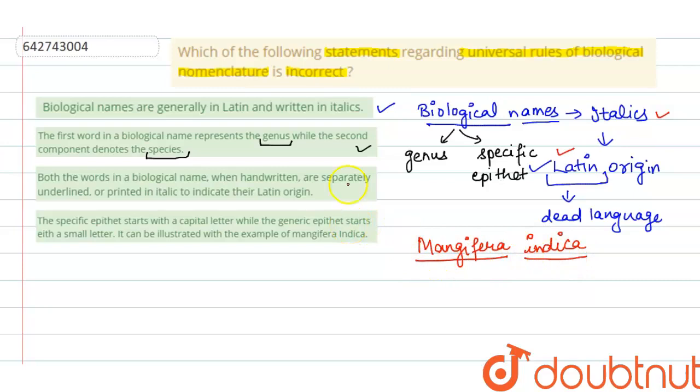The last option says that the specific epithet starts with a capital letter while the generic epithet starts with a small letter. So this option is incorrect. Why? Because when writing them, the first word,